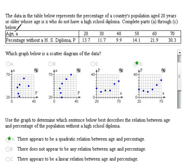So we have our age, and they say treat this like X, or treat it like the independent variable. And then we have our percentage without a high school diploma that they're calling P, so we're going to treat this like our Y.